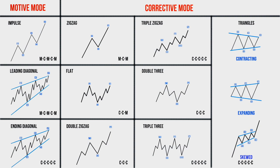As for skewed triangles, the most important thing to remember is that the generating lines always have a slope in the direction of the dominant trend. That is, if a skewed triangle appears on an uptrend, its generating lines will be directed upwards; if the pattern occurs in a downtrend, the generating lines will look down. Usually a skewed triangle is formed when the driving forces of the market have great potential and do not allow a usual sideways pattern to form but shift it up or down. Very often after the completion of a skewed triangle, the market skyrockets in the direction of the slope — a property that can and should be used in trading.